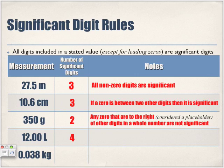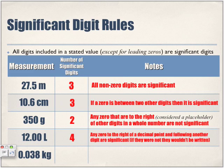Any zero to the right of a decimal that follows numbers is considered significant. If they were not significant, they wouldn't be written — because if I took away these zeros and just wrote 12 liters, is 12 liters the same as 12.00 liters? Yes, it is. So why include them? It means we want to put significance on these numbers. These three are certain digits, plus the one uncertain digit — that's why we include that final significant digit.